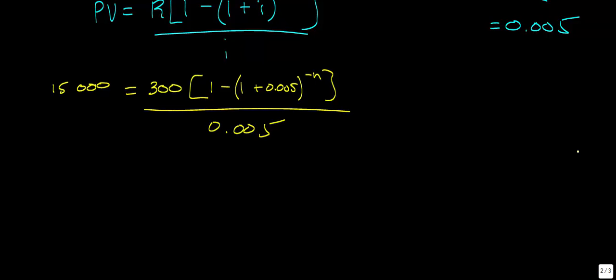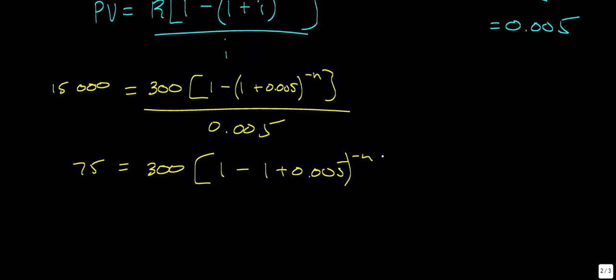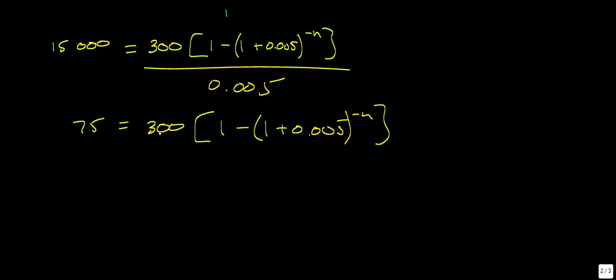Following the same steps, I multiply both sides by 0.005, giving 75 equals 300 times (1 minus 1.005 raised to the power of negative n). Dividing both sides by 300 gives 0.25. Removing the outer brackets: 0.25 equals 1 minus 1.005 raised to the power of negative n. The brackets around 1.005 are still needed since the negative n applies only to that number.